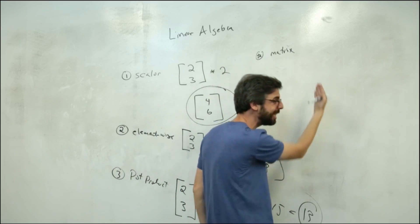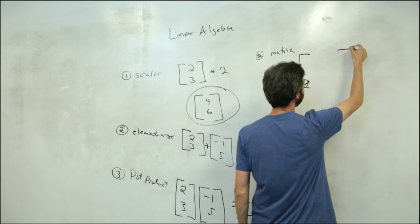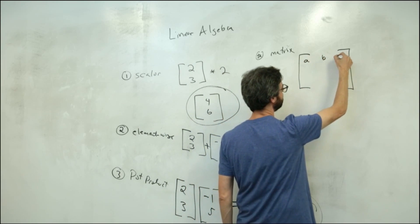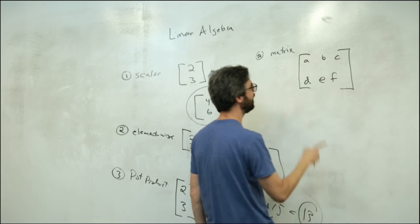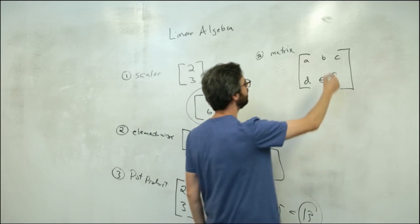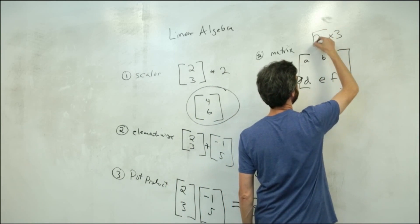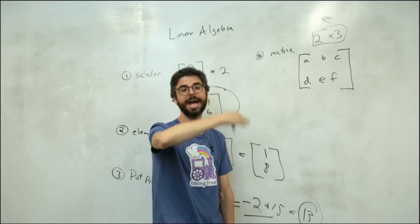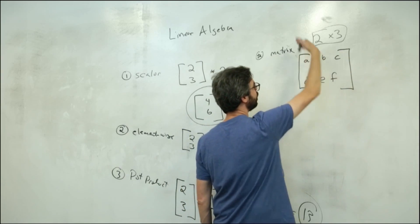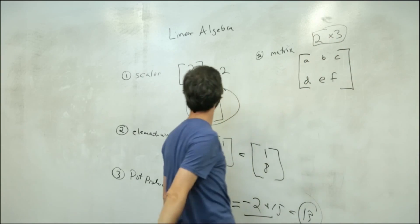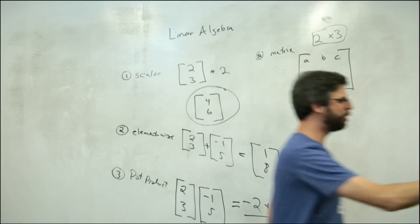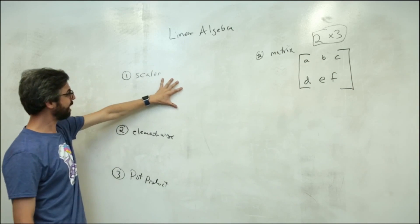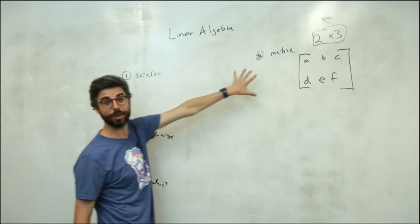So what is a matrix? Instead of a linear list of values, a matrix is a two-dimensional grid of values — think of it like: A, B, C / D, E, F. That would be a two-by-three matrix. Typically we refer to a matrix by its number of rows and columns: two rows, three columns. We can now redo all of those mathematical operations for matrices.